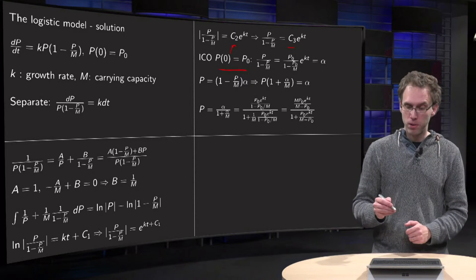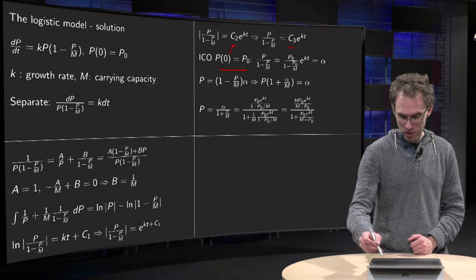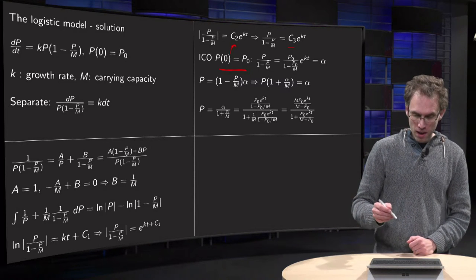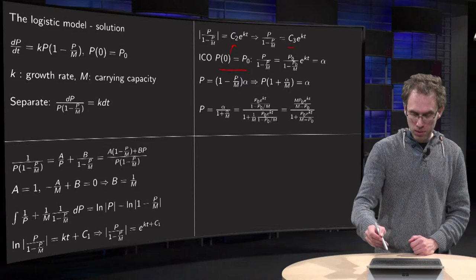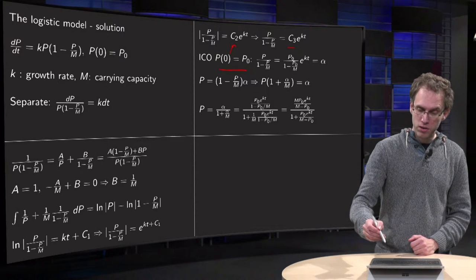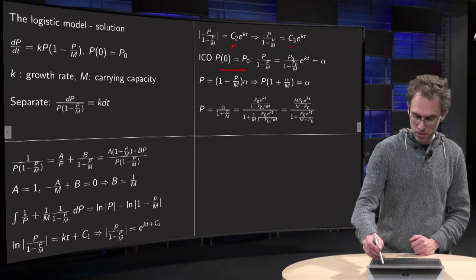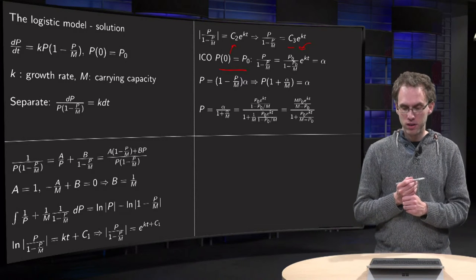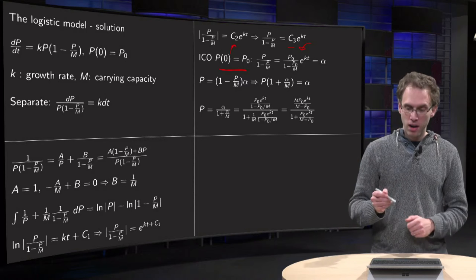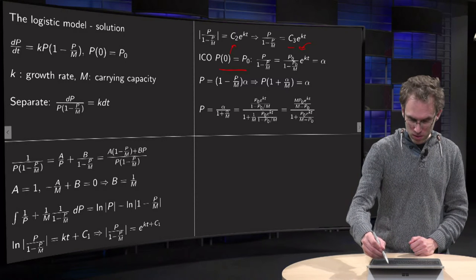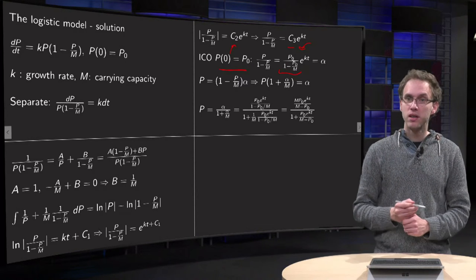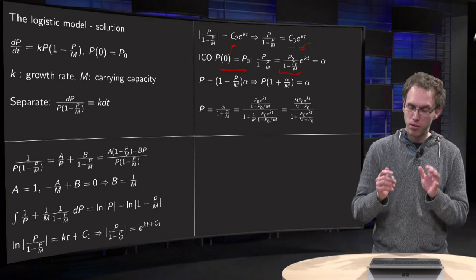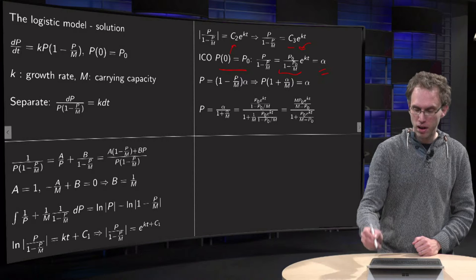So P of zero equals P0. Then plugging in t equals zero on the right gives you c3, and t equals zero on the left gives you P0 over (1 minus P0 over M). So this becomes your c3, and put this whole mass on the right hand side for a moment in the number alpha.